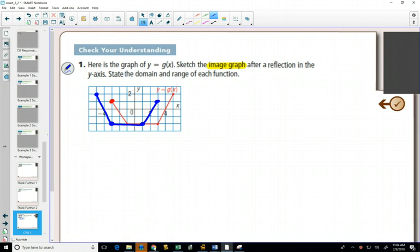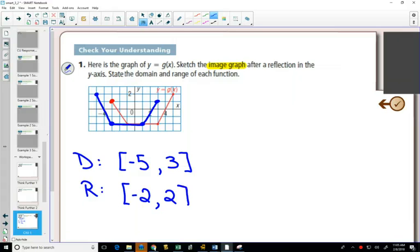We want to state the domain and range of both of these, so I'll start with our new one, the blue one. I'm going to use interval notation for this. So interval notation starts at your smallest value and goes to your biggest value. For domain, those are our x values. So our smallest x value on the blue graph is negative 5. And that negative 5 is with a square bracket because it's included. And our largest x value is 3. Our range, our smallest y value, is negative 2. Our largest y value is positive 2.